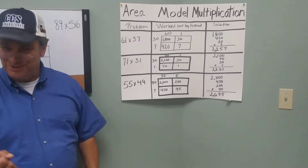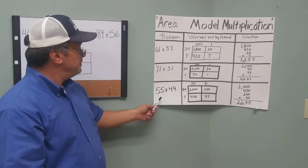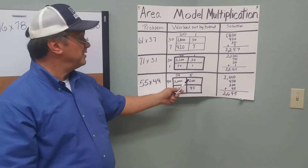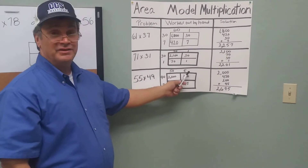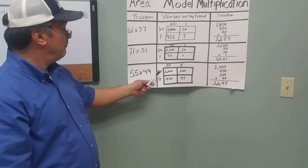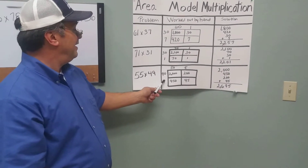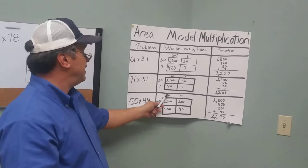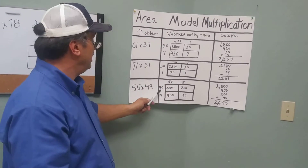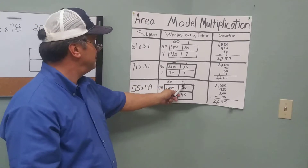Are you getting this? Good! Let's do another one. Our next problem is 55 times 49. We're going to take the 55 and place it on top of our box: 50 in the tens place and 5 in the ones place. Our 49 is going to go over with 40 for the tens spot and the 9 in the ones place. We're going to add 40 times 50, which is going to give us 2,000. 40 times 5 is 200. Then 9 times 50 is 450, and then 9 times 5 is 45.